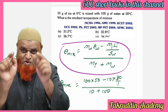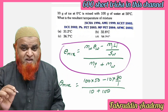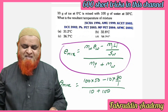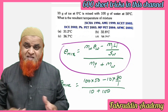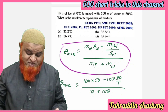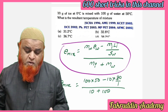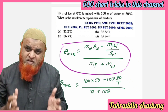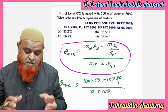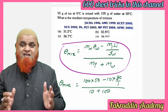My dear students, do you want to be the fastest problem solver in physics in India? Then you are at the right place. We shall discuss this problem which was asked in many examinations. He is asking us to find out: if 10 grams of ice at 0 degree Celsius is mixed with 100 grams of water at 50 degree Celsius, then what is the resultant temperature?